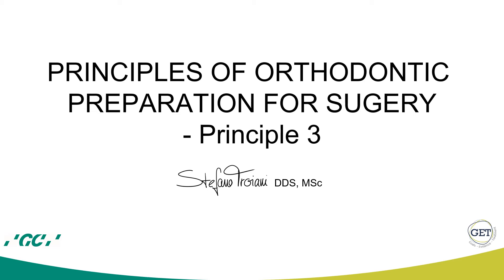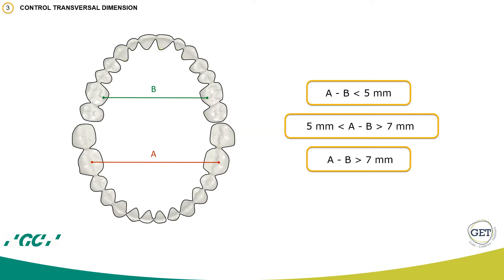In the second part of the presentation on principles of orthodontic preparation for orthognathic surgery, I will talk about the third principle: the control of transversal dimension. It is very important to decide which kind of approach you will follow when treating the transversal dimension of a surgical patient. To do this, you will first need to measure the entity of discrepancy between the upper and lower transversal dimensions.